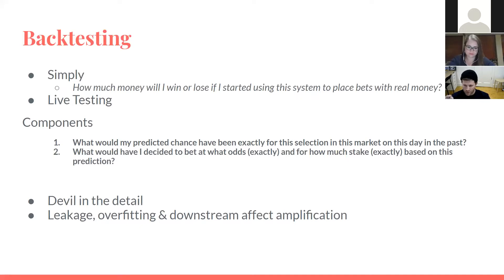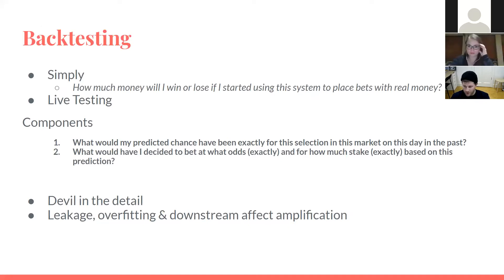Backtesting can be broken down into two components. The first is: what would my predicted chance of winning be for this selection in this market on this day in the past? That's basically the essence of modeling — all the things you hear about leakage, overfitting, hold-out sets, and validation are your typical modeling challenges. But even if you solve part one, you've got to do part two: what odds would I have decided to bet at exactly, and for how much stake exactly, based on this prediction? That's an afterthought for most people. They think if they solve part one, they'll get a good idea about profitability — but there are lots of ways you can overfit your staking mechanisms and betting decisions.